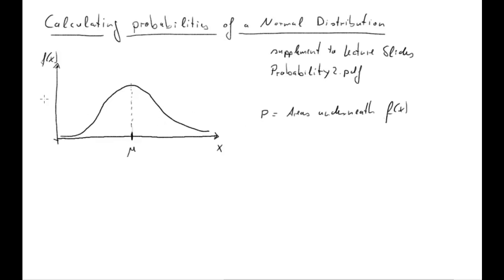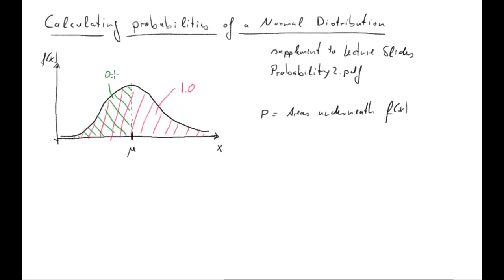The entire area underneath here represents the probability that our outcome of x will take any value on that axis, and that probability is going to be equal to 1. We already discussed in the lecture that the probability of having an outcome smaller than the mean — given this is a symmetric distribution — is going to be 0.5, because that mean will split the distribution into two bits.